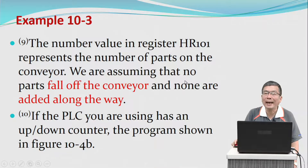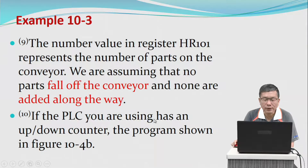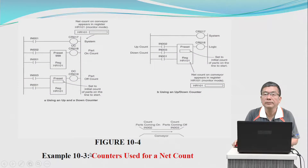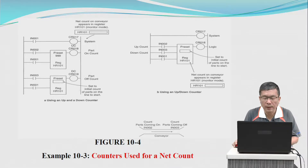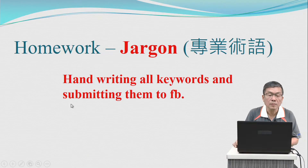We are assuming that no parts fall off the conveyor and none are added along the way. If the PLC you are using has an up and down counter, the program is shown in figure 10.4b. This picture shows the counter used for a net count.